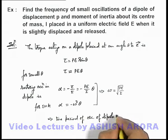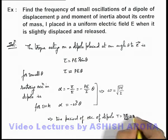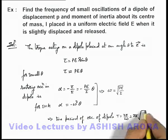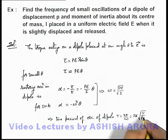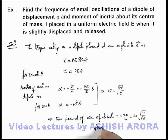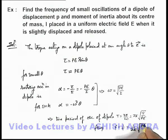The time period is 2π√(I/PE), and hence frequency of oscillation can be written as the reciprocal of the period, which is f = (1/2π)√(PE/I). That'll be the answer to this problem.